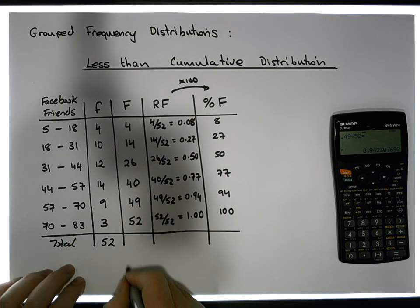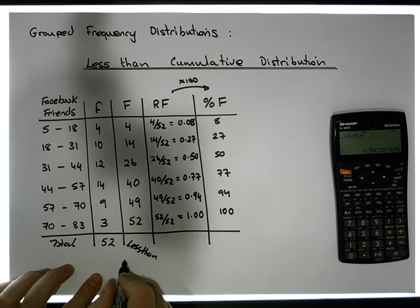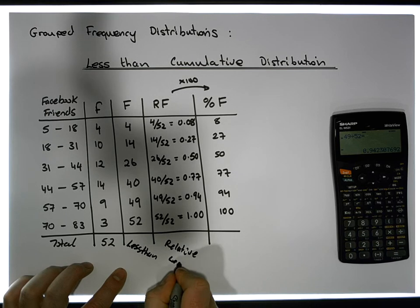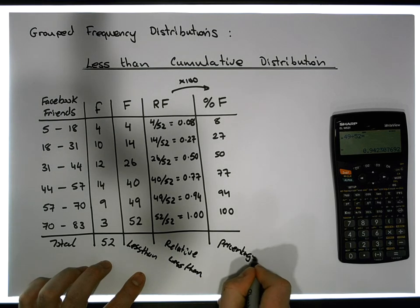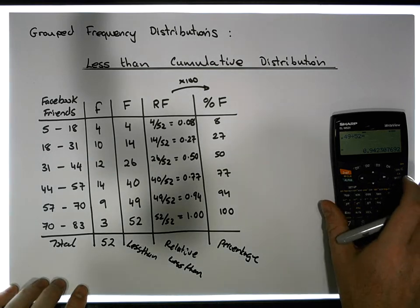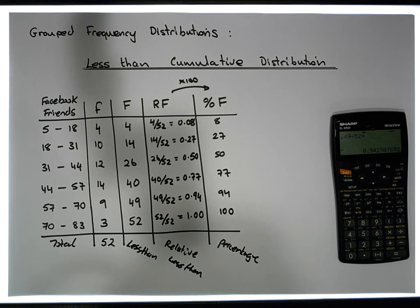So we have our less than cumulative frequencies column, our relative less than cumulative frequencies, and our percentage cumulative frequencies. This is Jonathan Lambert with the Mathematics Development and Support Service at the National College of Ireland. I hope this video was intuitive and helpful. Thanks for watching.